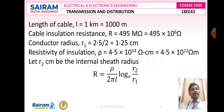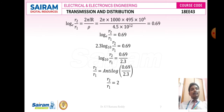We need to find r2, the radius of insulation. Using the formula R = ρ/(2πl) × log_e(r2/r1), we rearrange to get: log_e(r2/r1) = 2πlR/ρ = 2π × 1000 × 495 × 10^6 / (4.5 × 10^12). After simplification, log_e(r2/r1) = 0.69.